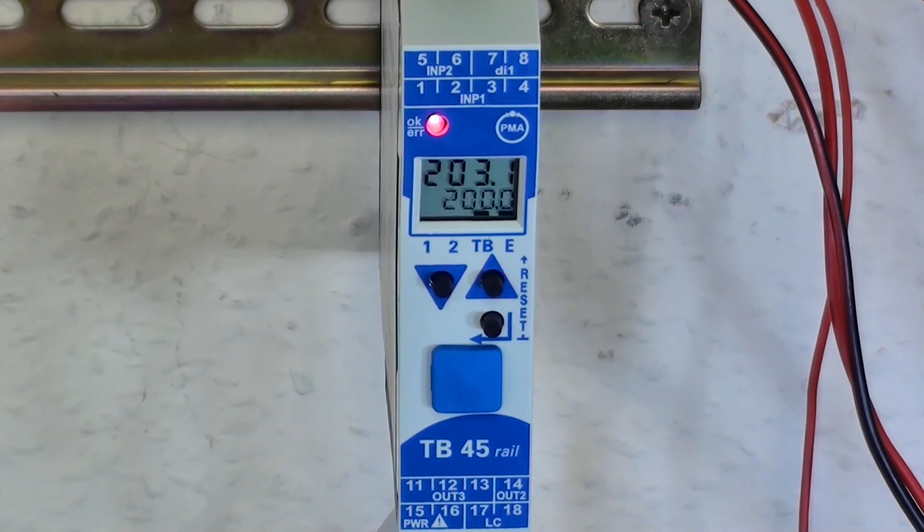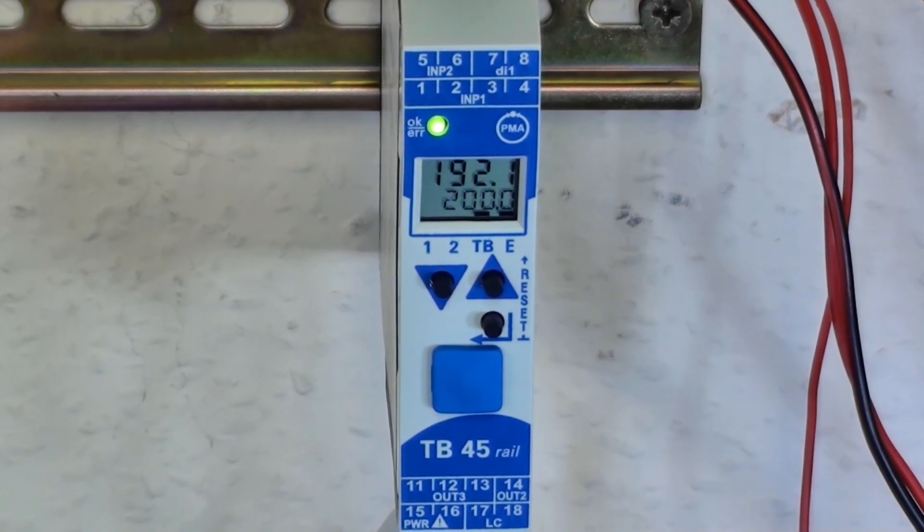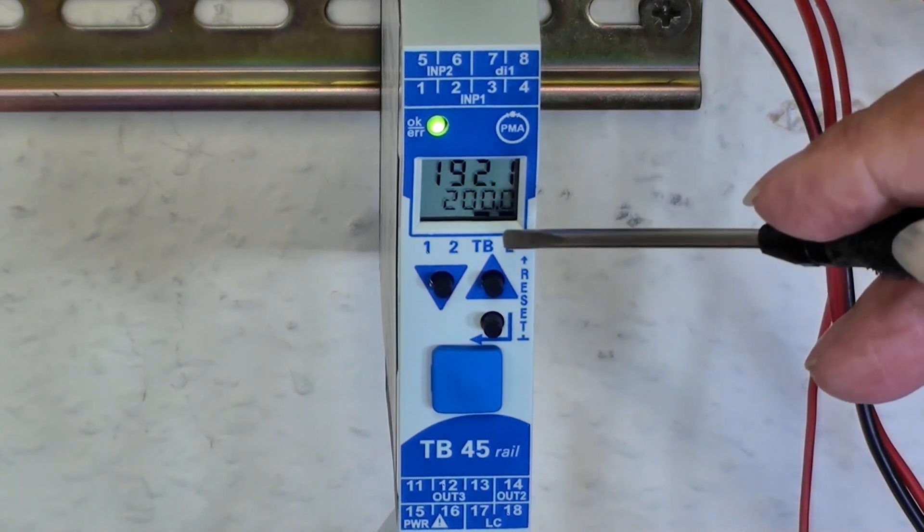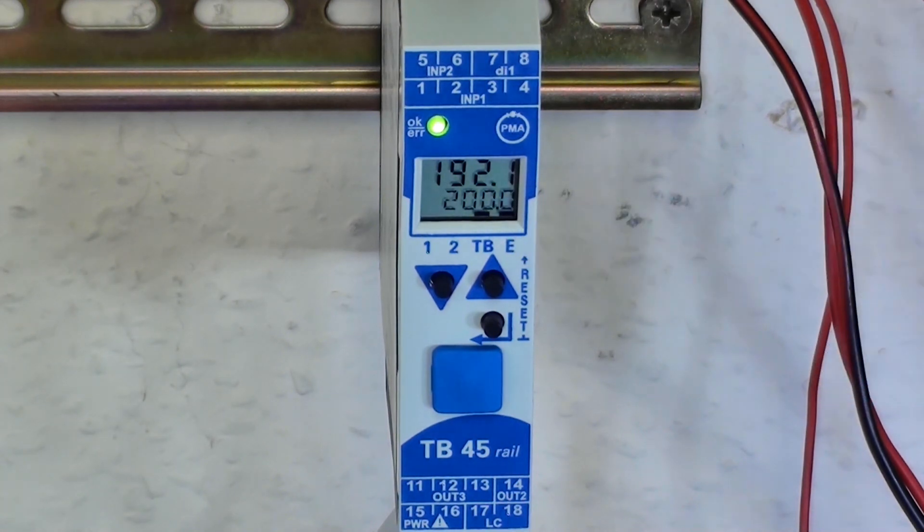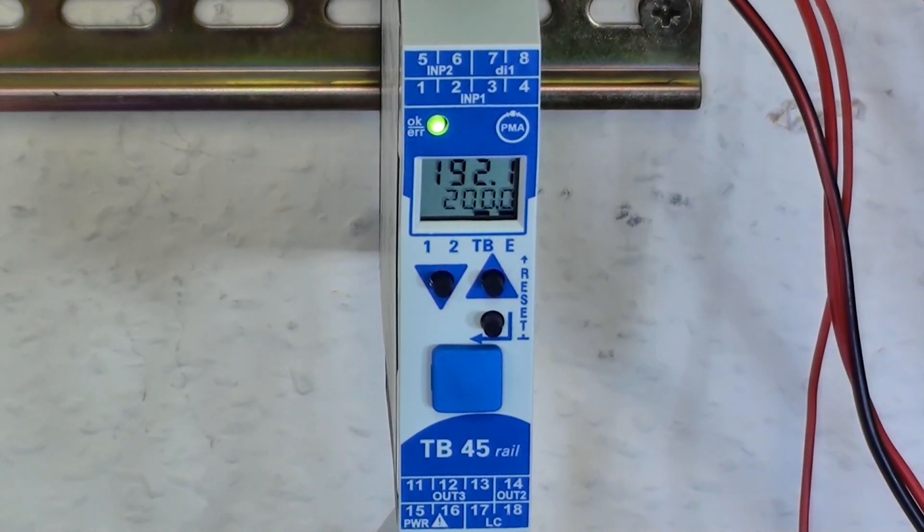When I come down below it, the processing is now back into normal operation. But I'm still in an exceed condition. So the exceed light now has gone from flashing to a steady state.